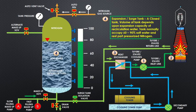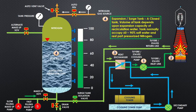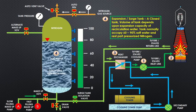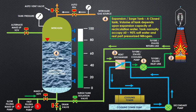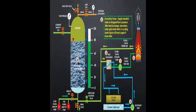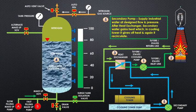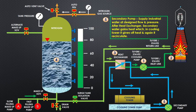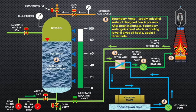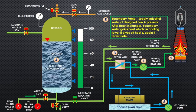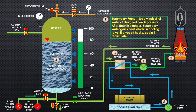Tank normally occupies 60 to 90 percent soft water and the rest part is pressurized nitrogen. Secondary pump supplies industrial water at designed flow and pressure. After heat exchanger, secondary water gains heat which in cooling tower it gives off heat and again it recirculates.